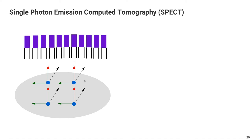Then, instead of using one collimated detector, you can use many collimated detectors. And if you do that, then you acquire many of those projection lines.